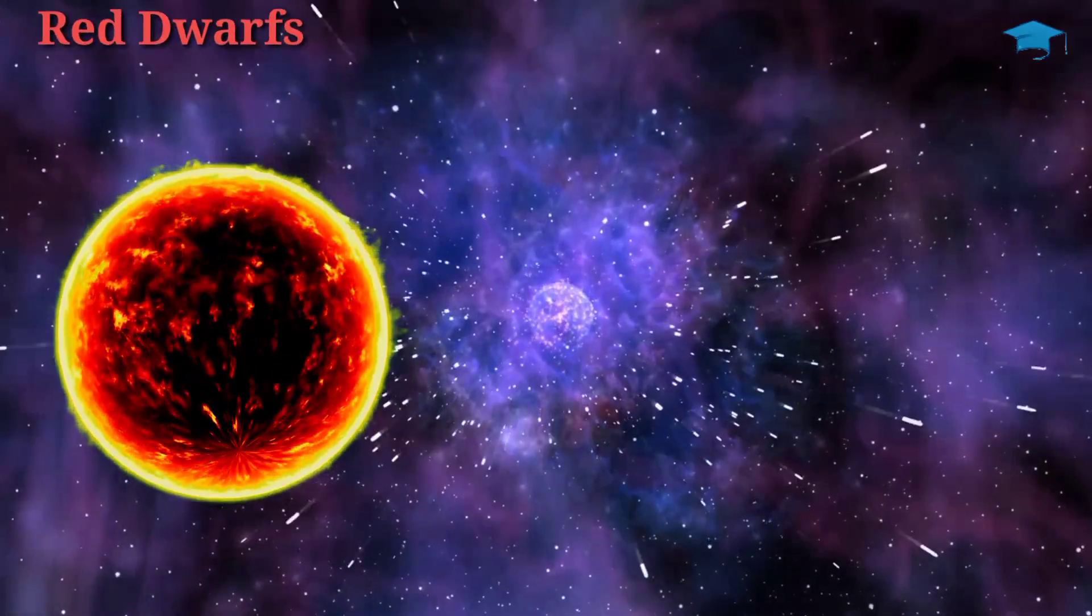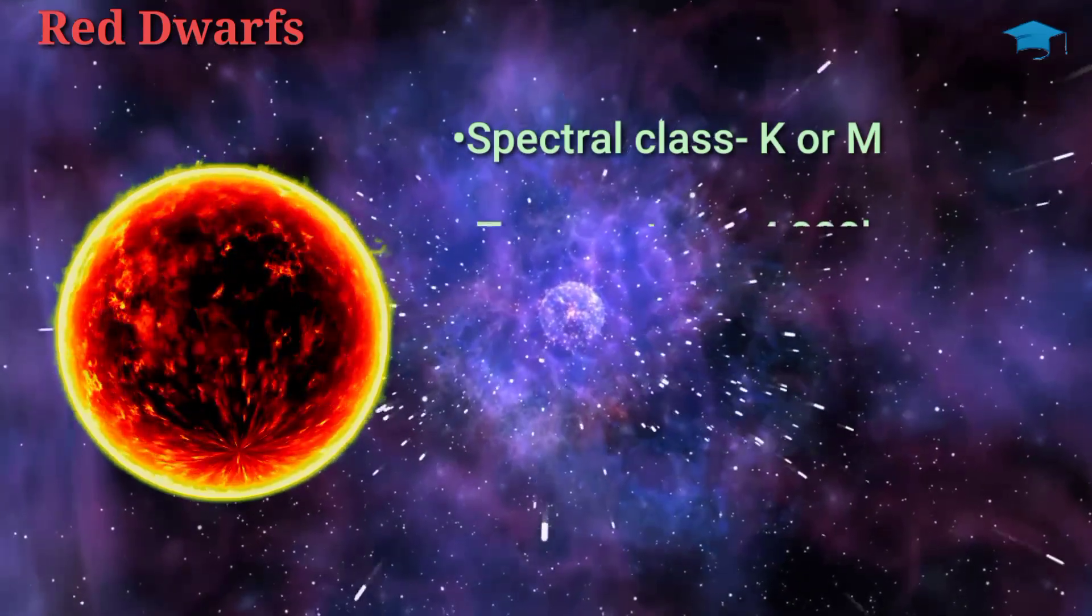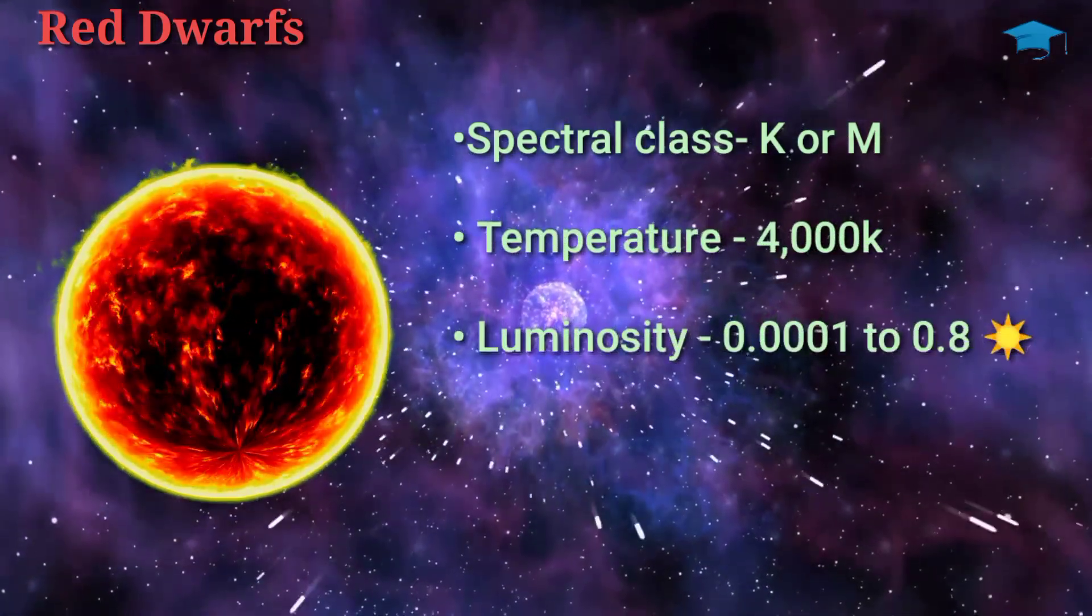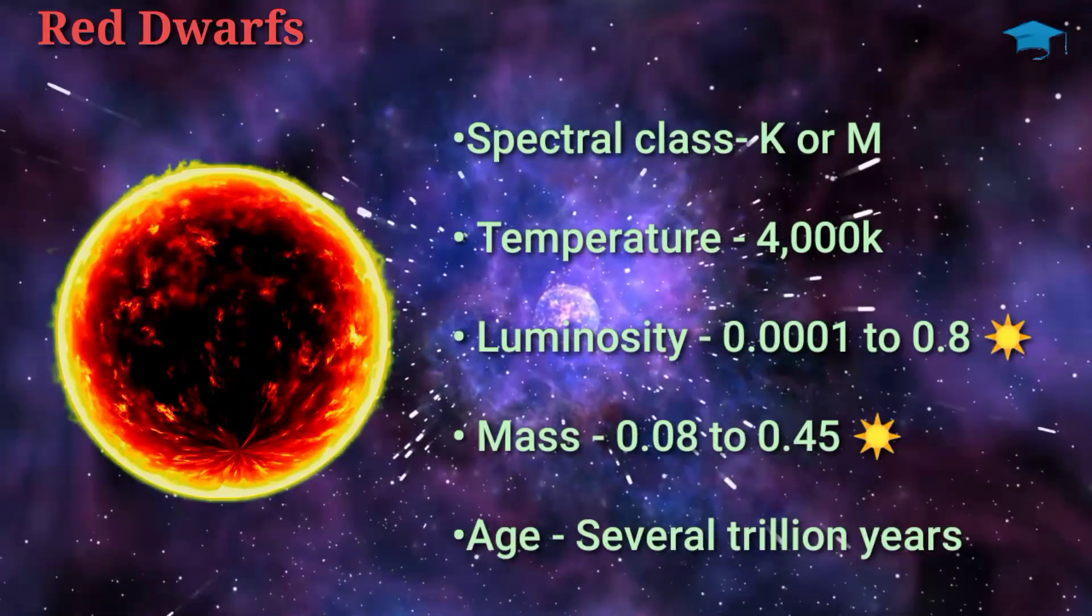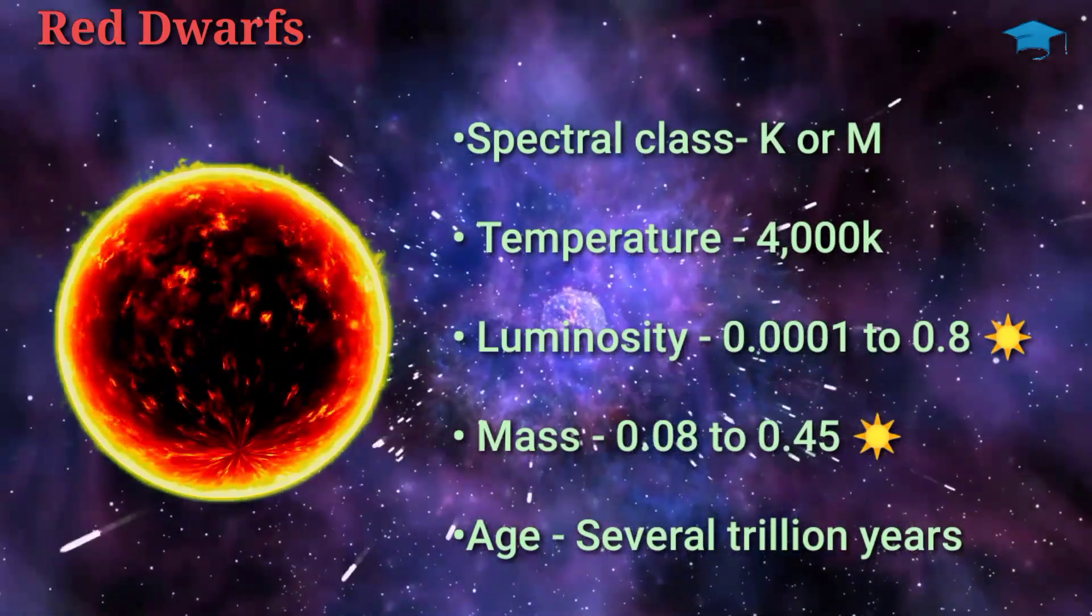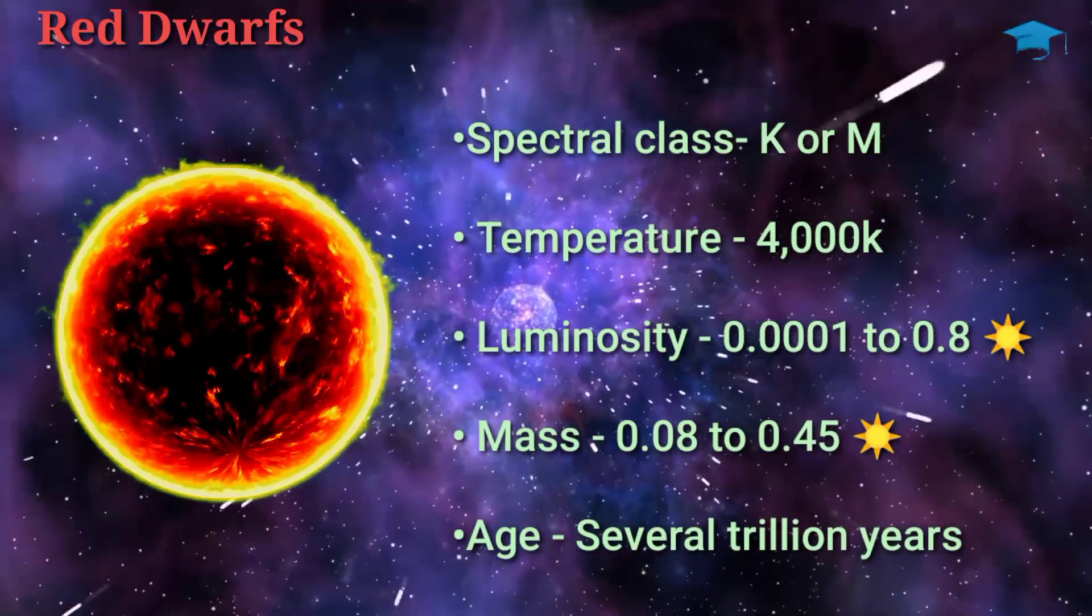These stars have a prevalence of around 73% with either spectral type K or M. Their temperature is usually around 4,000 Kelvin and with luminosities of around 0.0001 to 0.8 that of sun. And mass of around 0.08 to 0.45 that of our sun. And they last about several trillion years.